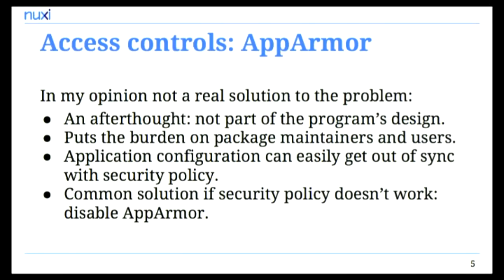These configurations often break over time. For example, a new version of the C library is used with a somewhat different access pattern on the file system, depending on additional configuration files in /etc. Those security policies need to be updated, and getting it right is a really tedious job. Once these applications get out of sync, the user only has one option: disable AppArmor or SELinux. A novice Linux user would Google the error message, find it's because of AppArmor, Google 'disable AppArmor,' run the apt-get command, and they're done. These systems are not intuitive enough.